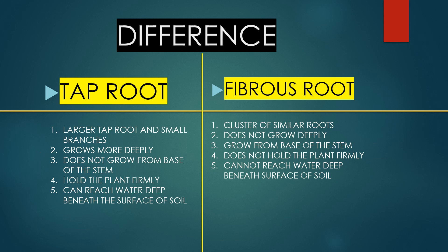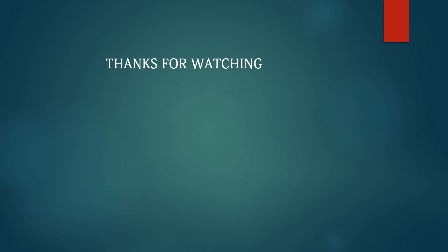Tap root can reach water deep beneath the surface of the soil. Fibrous root cannot reach water deep beneath the surface of the soil because it stays near the surface of the soil.